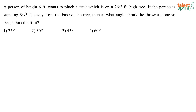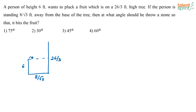Second problem: A person of 6 feet height wants to pluck a fruit on a tree of height 26/3 feet. The person is standing 8/√3 feet away from the base of the tree. At what angle should he throw a stone so that it hits the fruit? The effective height difference is 26/3 − 6, and the horizontal distance is 8/√3 feet.